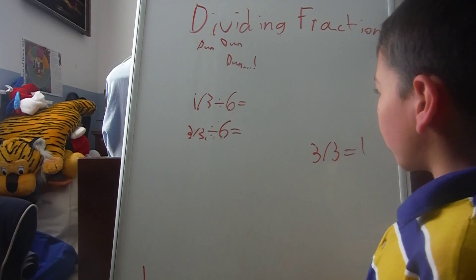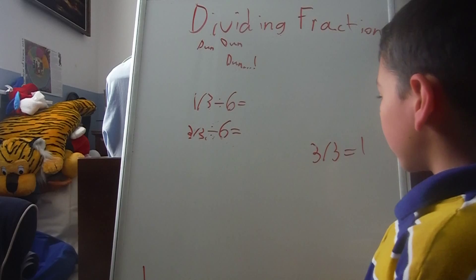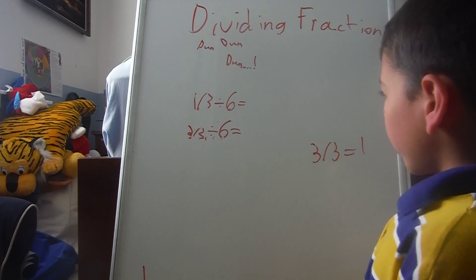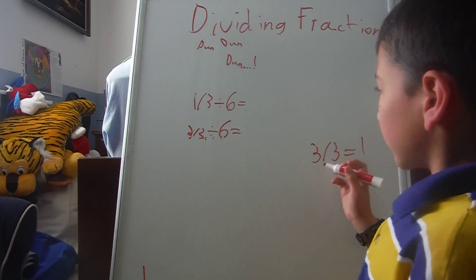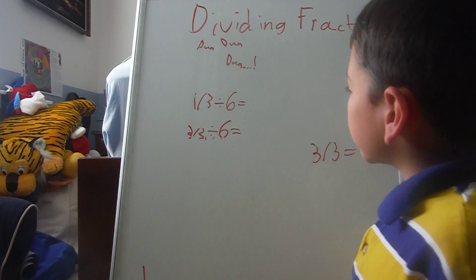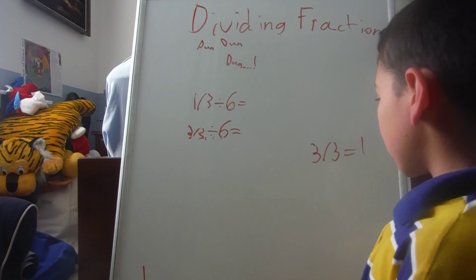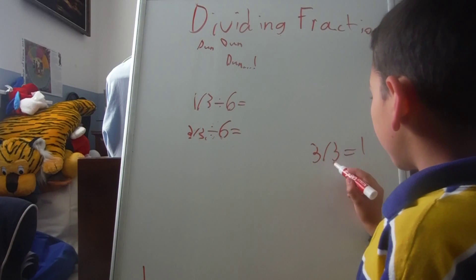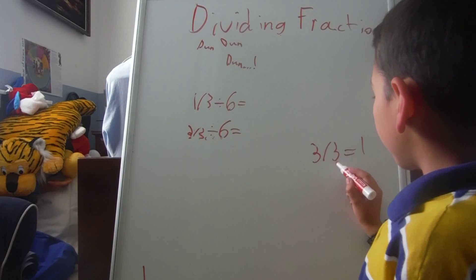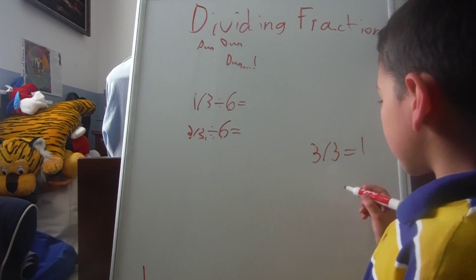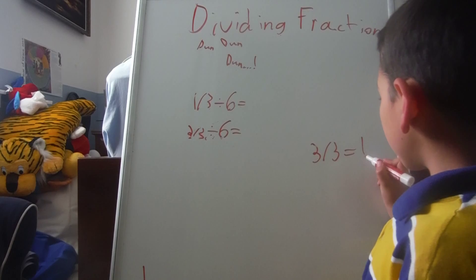So, wait. Wait a second. I think I just got that wrong. Three thirds equals one. Oh, I got that right. Just, now we have to do. Wait, no. I got it wrong. It's three times six.